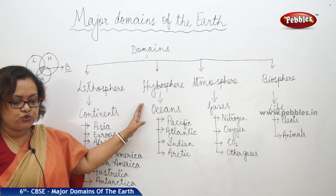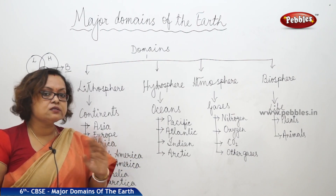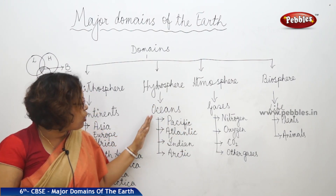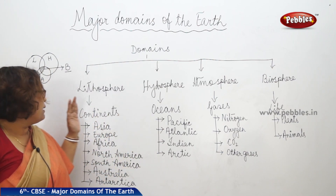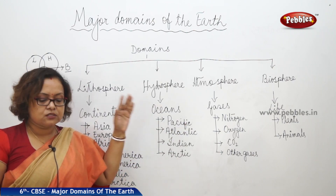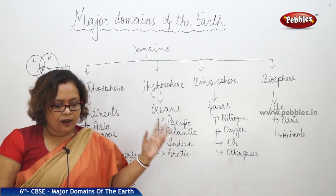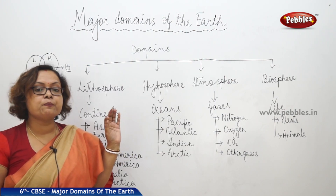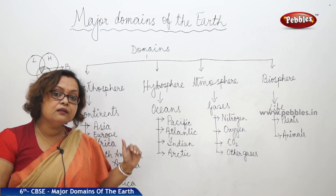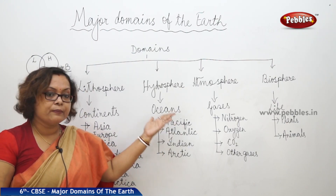Coming to the oceans — oceans are massive water bodies, but the water is salty. Ocean waters are never static; they always move from one place to another, and all oceans are interconnected, separated by continents but connected at some places. The Pacific Ocean is the largest ocean, spread over one-third of the earth. The Mariana Trench, the deepest part of the earth, is located in the Pacific Ocean — its depth is even greater than the height of Mount Everest.